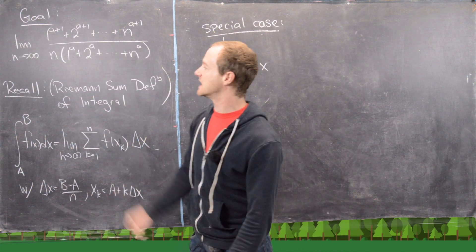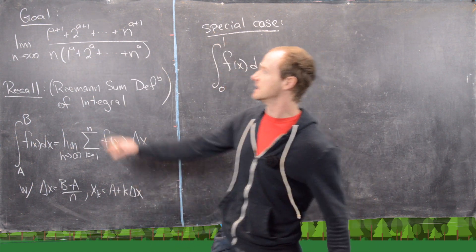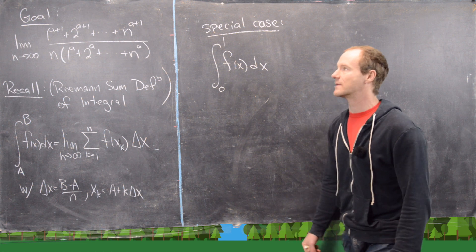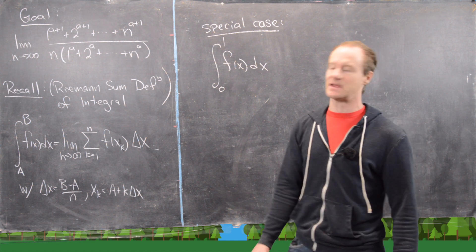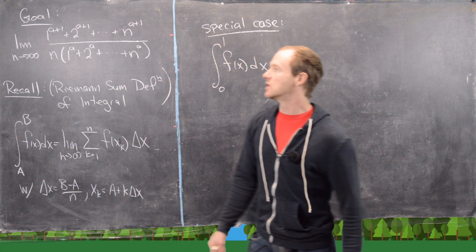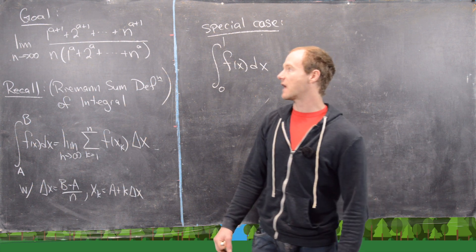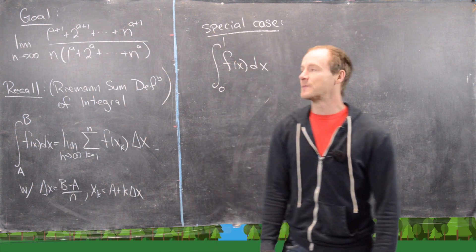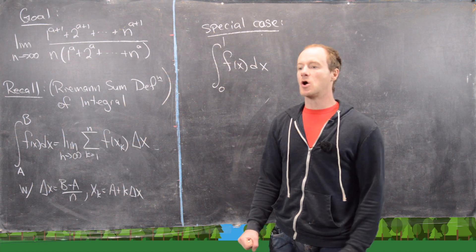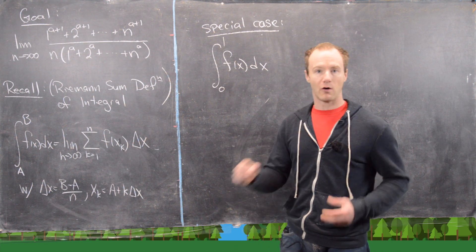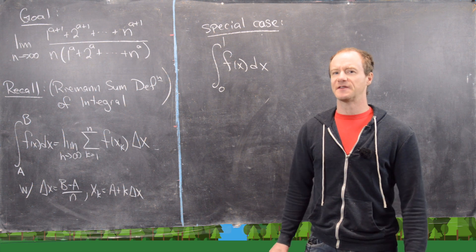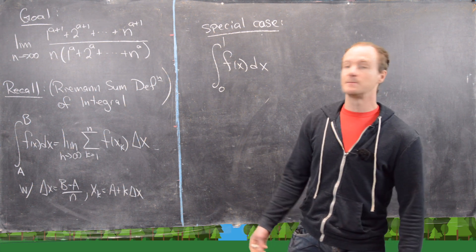We've got this limit as n goes to infinity of 1 to the a+1 plus 2 to the a+1, all the way up to n to the a+1, over n times (1 to the a plus 2 to the a, all the way up to n to the a). Maybe I'll let you guys try to think about what values of a are allowable here — I think that's a nice thing for you to consider.